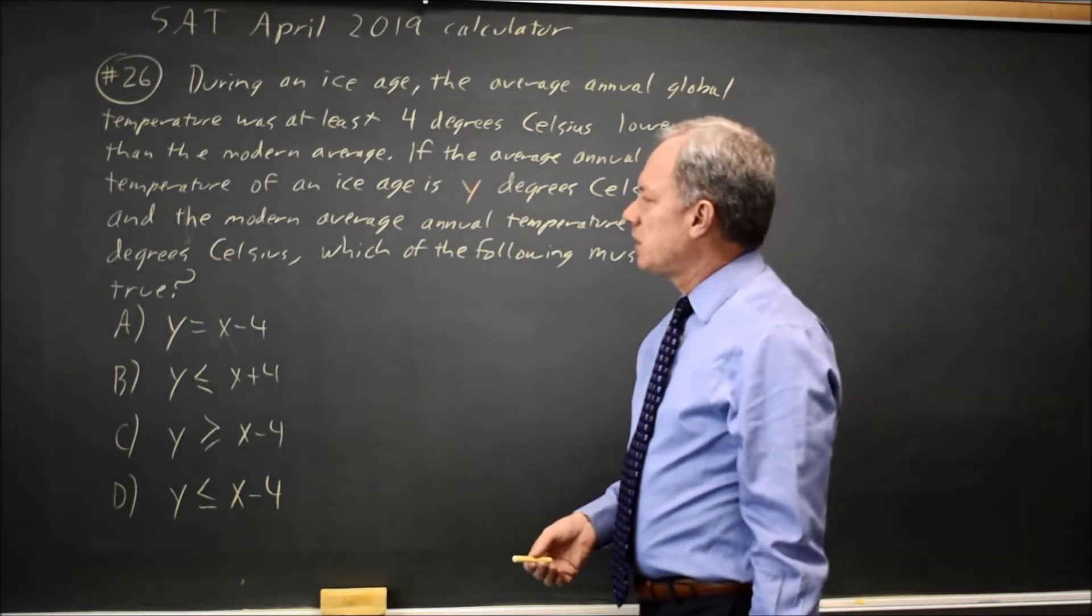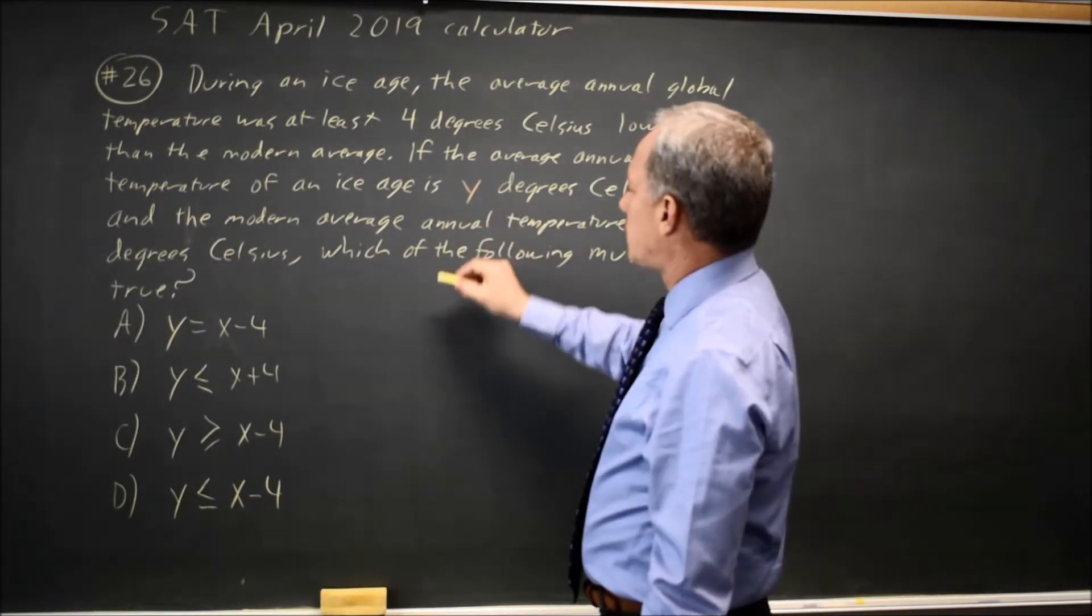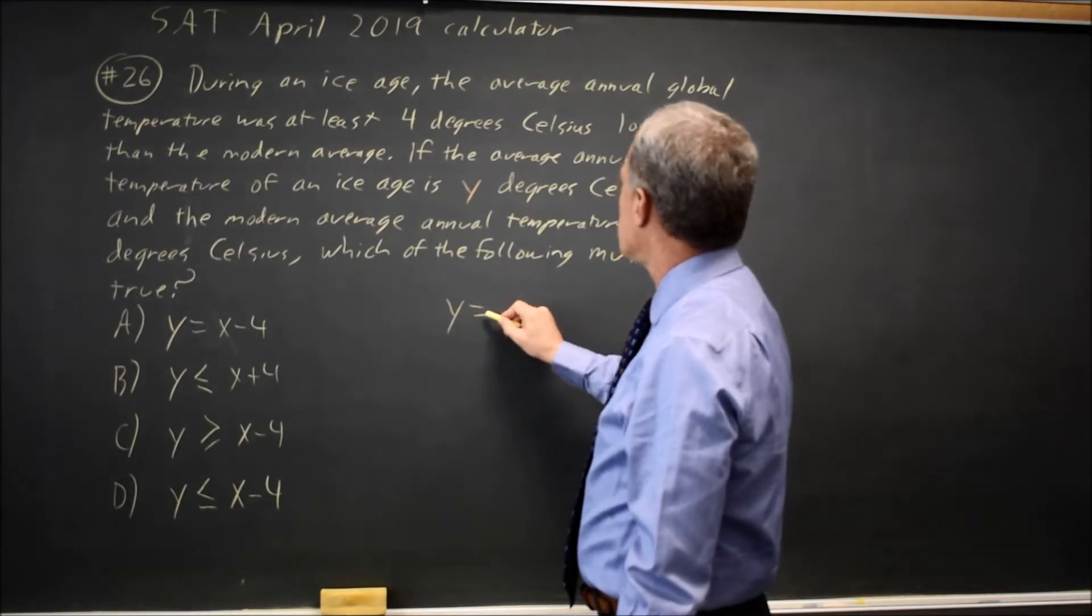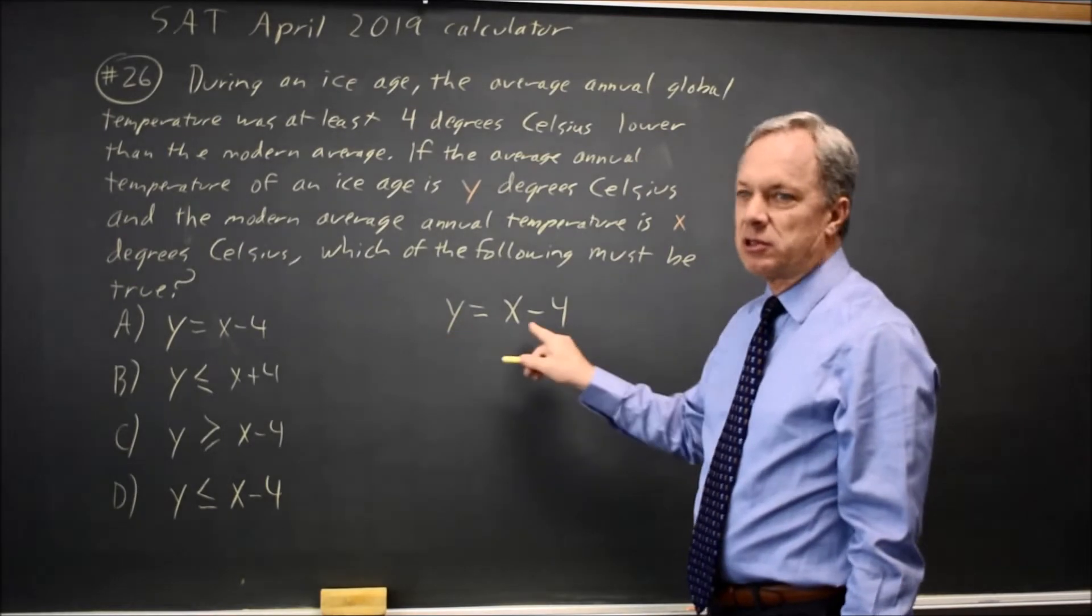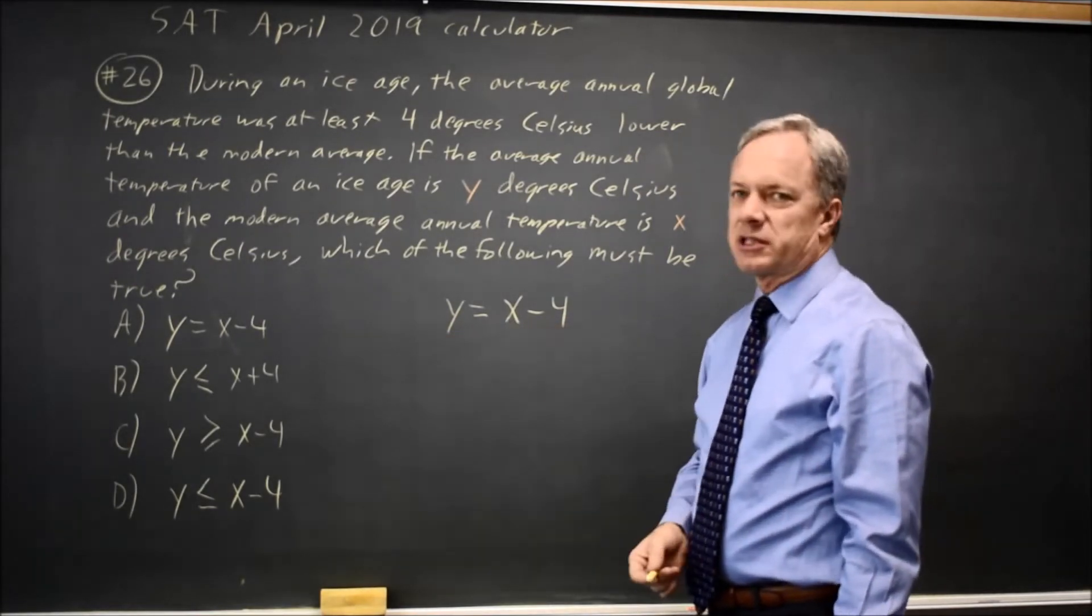If you take that as equal to 4 degrees lower, the ice age Y would be equal to the modern average X minus 4, and that makes the ice age temperature 4 degrees lower than the current temperature.